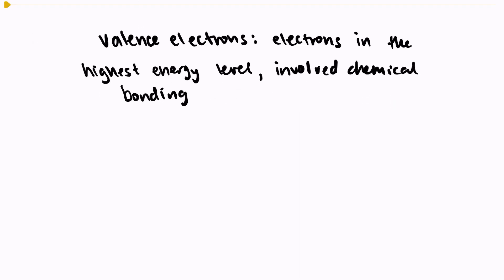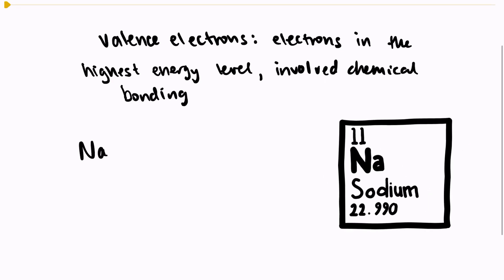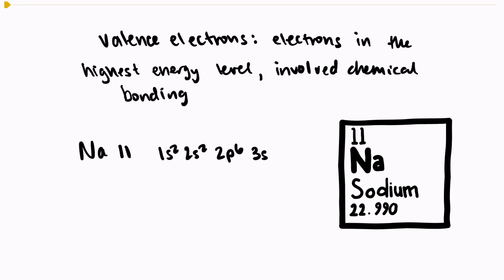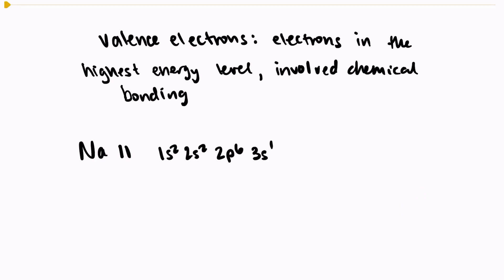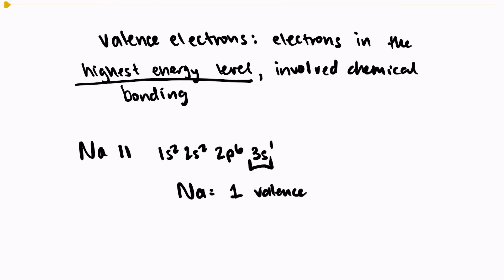So how do we find the number of valence electrons? There are a few different ways to do that. Let's look at the electron configuration of sodium. Sodium on the periodic table has an atomic number of 11, which means it has 11 protons, and a neutral atom will also have 11 electrons. If we write out the electron configuration — and if you don't remember how to do that, check out one of my other videos — we'd have 1s2, 2s2, 2p6, 3s1. Looking at the highest energy level, that would be energy level 3. So sodium would have 1 valence electron, meaning there is 1 electron involved in chemical bonding.